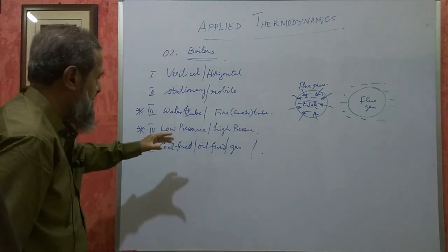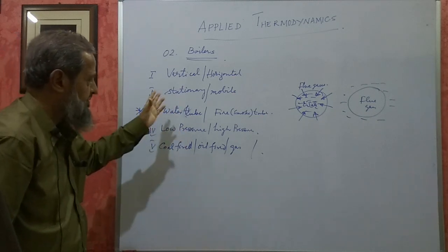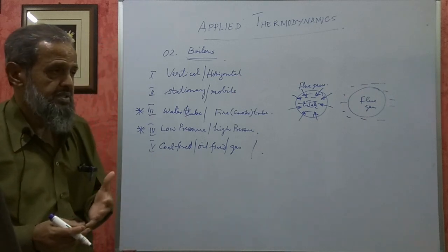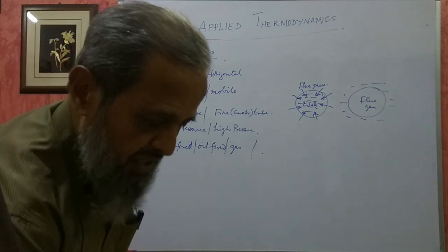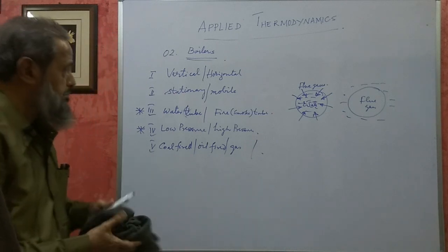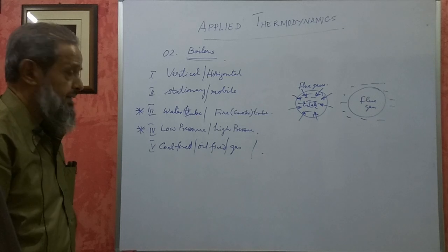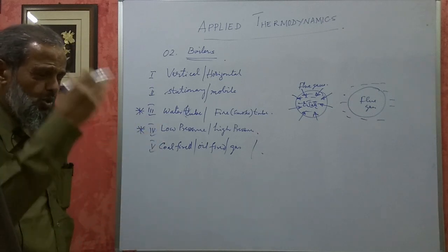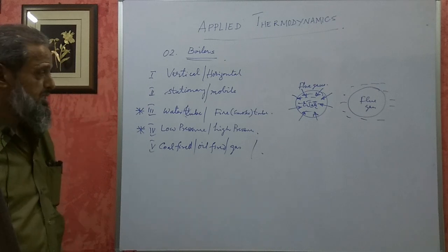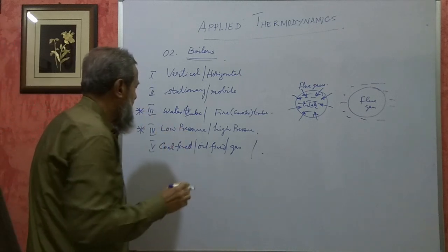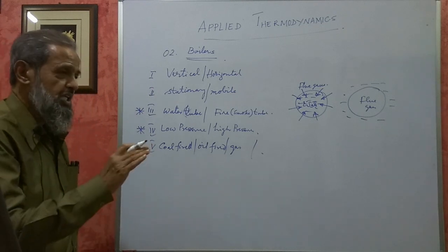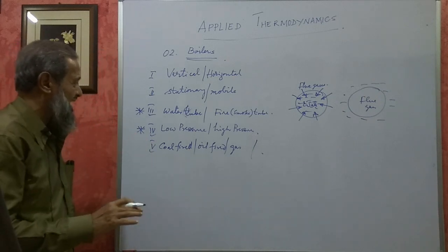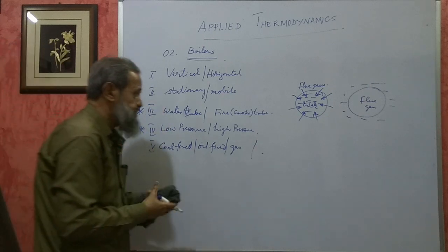Now, the selection of a boiler depends on the fact that we do not require steam of the same pressure at every place. We use steam in various places — like in hospitals for sterilization of equipment and clothes, in sugar factories, and in milk dairies. There are so many places where boilers are used, and the pressure of steam will not be the same everywhere. So depending upon that, we have to select which type of boiler to use.